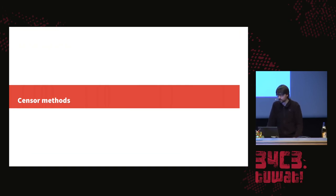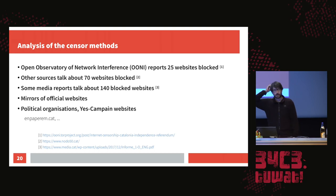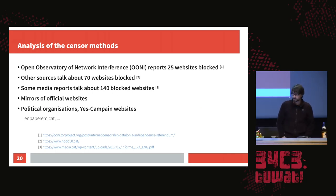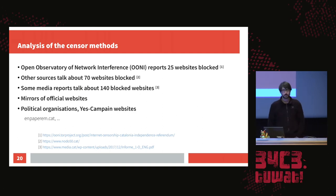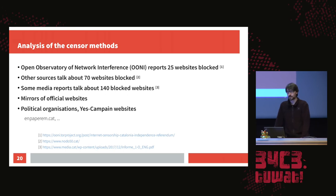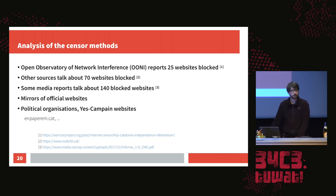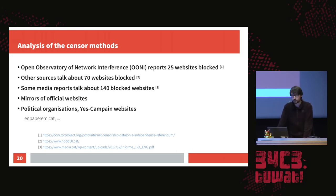Let's have a look at the censorship methods. Overall, the number of blocked sites circulates between 25, according to the Open Observatory of Network Interference from the Tor project, up to 140 blocked websites. Most of the sites blocked or censored were mirrors of the official websites, but also political organizations which are pro-independence, or the Yes campaign websites from political parties that ran a campaign to vote Yes, and some smaller websites created by social movements of Catalonia to support the referendum.